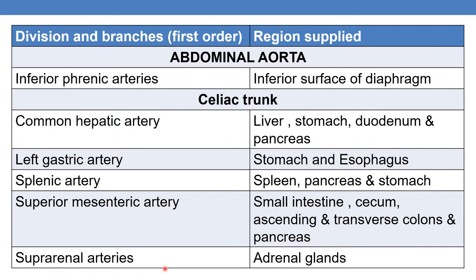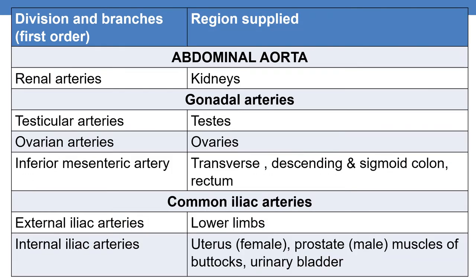Next, suprarenal arteries supply blood to the adrenal glands. Renal arteries supply blood to the kidneys. Gonadal arteries are of two types: testicular arteries supplying blood to the testes, and ovarian arteries supplying blood to the ovaries. The inferior mesenteric artery supplies blood to the transverse, descending, and sigmoid colon and rectum. Finally, common iliac arteries — which are the external iliac and internal iliac arteries — where external iliac supplies the lower limbs and internal iliac supplies the uterus in females, prostate in males, muscles of the buttocks, and urinary bladder.